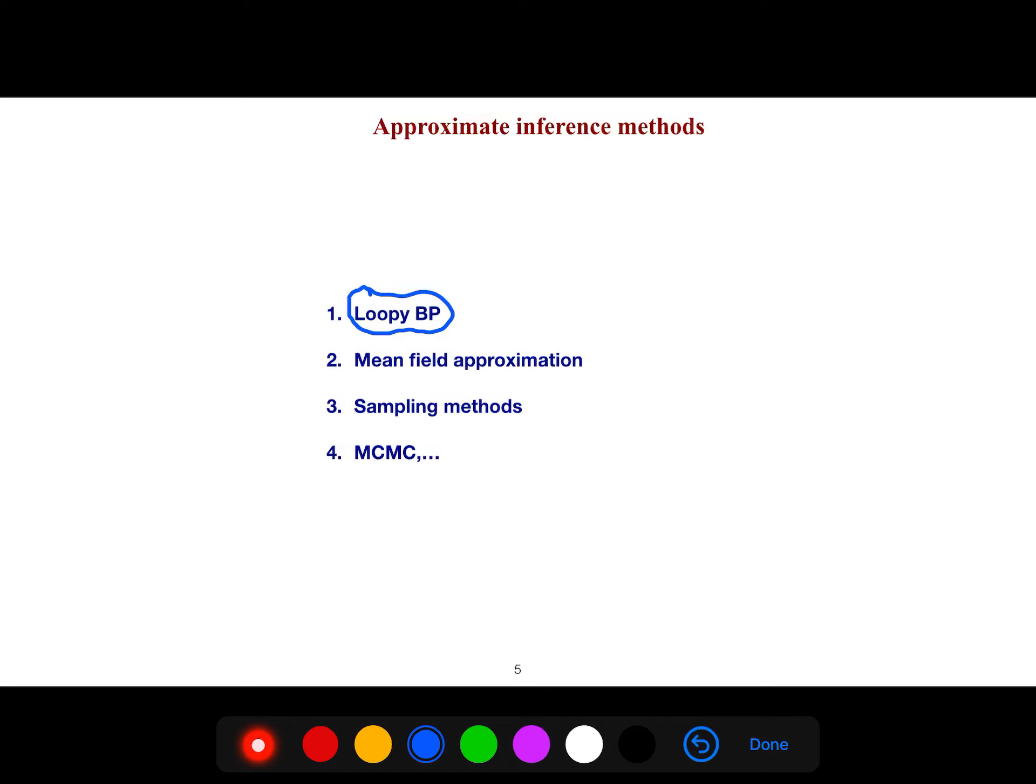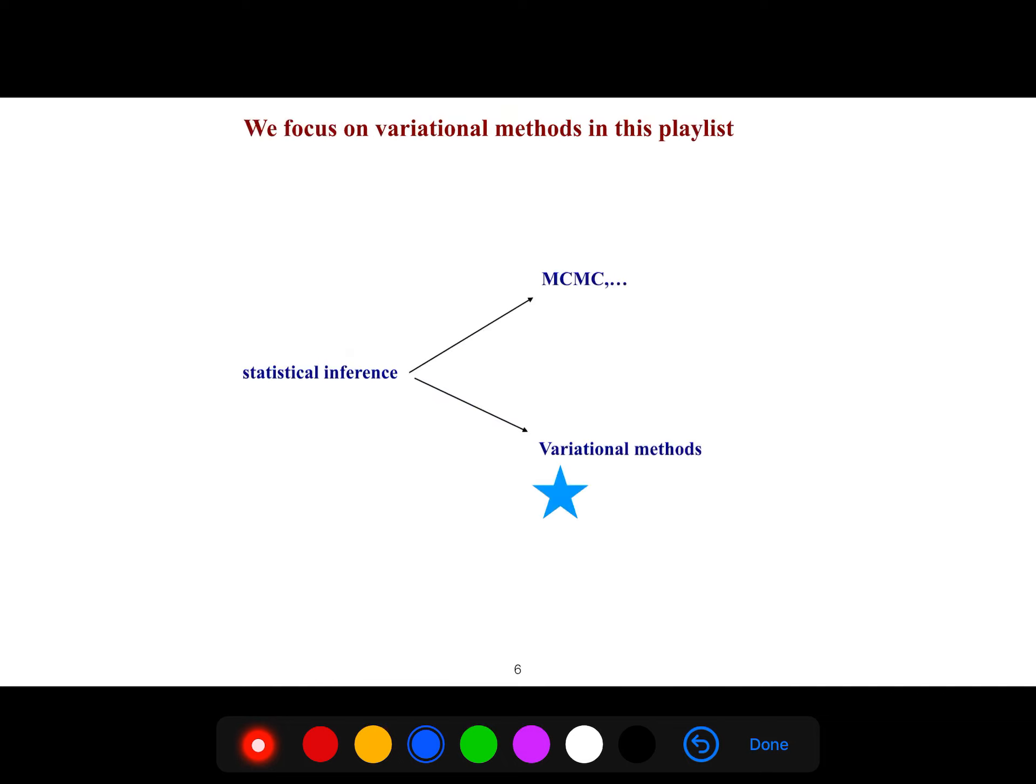And you know mean field approximation you have seen it in probabilistic graphical models from Bayesian networks. For example in one of my lectures exactly two years ago I explained mean field approximation. Although I love Markov chain Monte Carlo but in this playlist we focus on variational approaches, variational methods. In this playlist we only talk about variational methods in statistical inference.